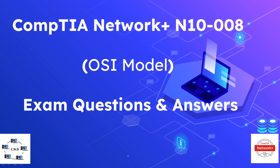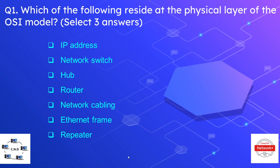So without further ado let's get started with the questions and answers. Question number one is: which of the following reside at the physical layer of the OSI model? We have to select three answers and the options are IP address, network switch, hub, router, network cabling, ethernet frame, and repeater.